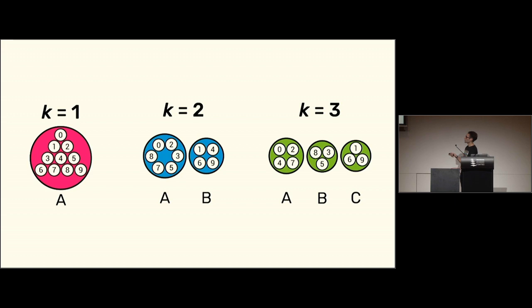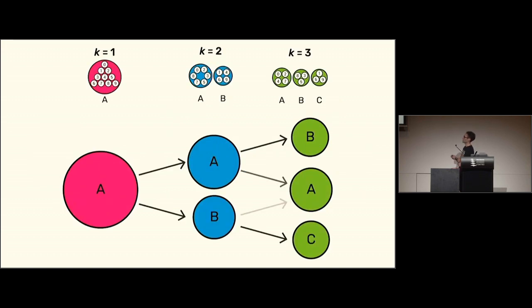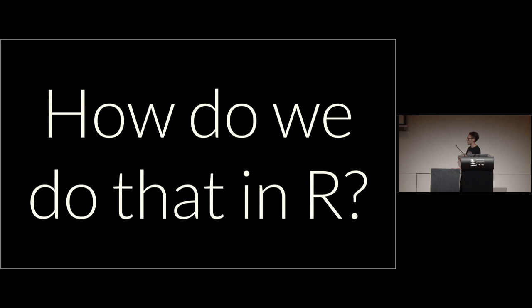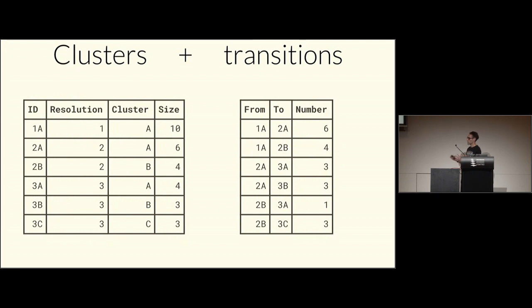I wanted to represent these relationships, so the idea was to draw a line between clusters at different resolutions if samples move from one to the other. The result: a big cluster splits into two, and some of those samples go to cluster B or cluster A at k=3, but none go to cluster C, so no line is drawn there. It's a pretty simple idea.